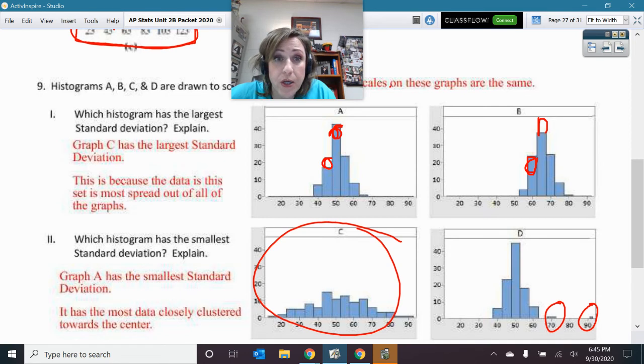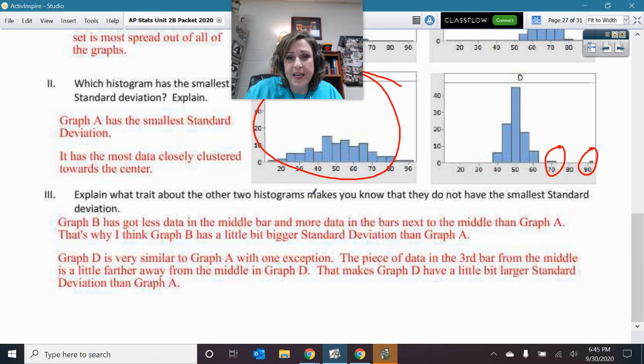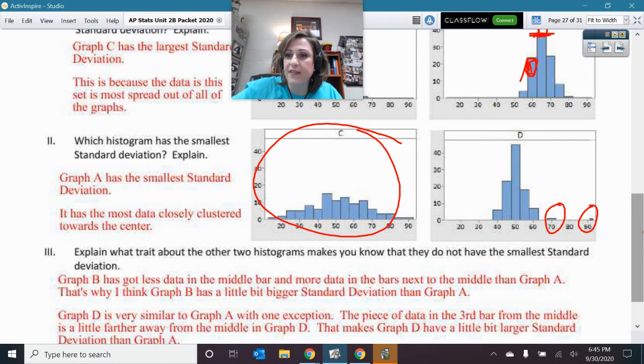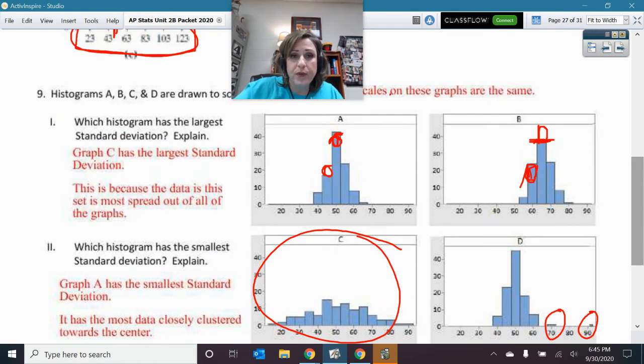Now, which one of those has more in the center, more closely clustered to the center? Well, the one with the highest in the middle and the less farther away. So that's A. A has the highest in the middle and then less in the bar next to it. See, this one had less in the middle and more next to it. So more next to it. So graph A has the smallest because it has the data most closely clustered to the center. All right. Explain what other trait about the other two histograms makes you know that they don't have that smallest. I kind of did that already. So D, of course, has these upper outliers. And then I already talked to you about B not having this right here. Some more that were in the bar beside the middle, not the most in the middle.